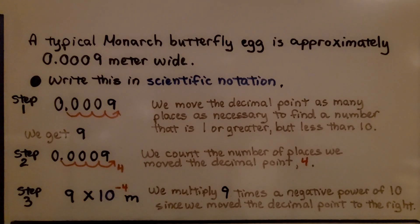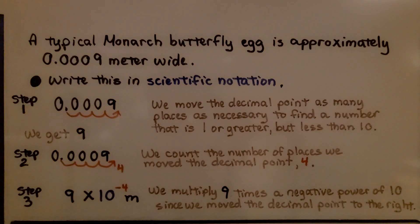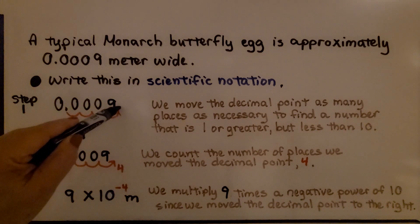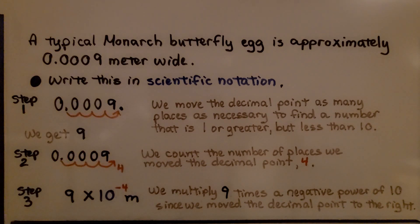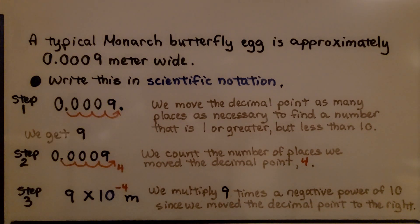A typical monarch butterfly egg is approximately 0.0009 meter wide. We need to write this in scientific notation. Step one: we move the decimal point 1, 2, 3, 4 hops. We move the decimal point as many places as necessary to find a number that is 1 or greater but less than 10. And 9 is greater than 1 and less than 10, so we know we got 9.